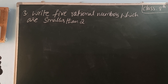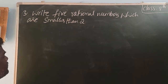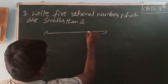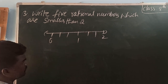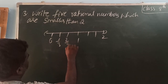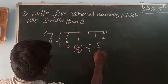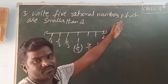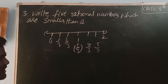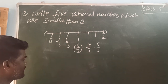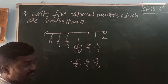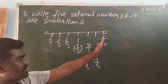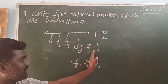Write 5 rational numbers which are smaller than 2. Below 2, we can divide intervals into 3 parts, getting 1 by 3, 2 by 3, 3 by 3, 4 by 3, 5 by 3. We could also divide into 4 or 5 parts, or write any rational numbers less than 2, such as minus 1 by 6, minus 2 by 6, minus 3 by 6. So, 5 rational numbers less than 2 can be: 1 by 3, 2 by 3, 3 by 3, 4 by 3, 5 by 3.